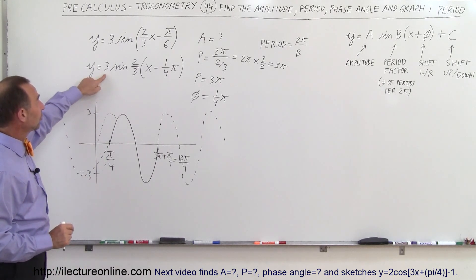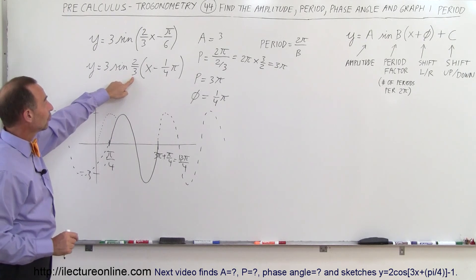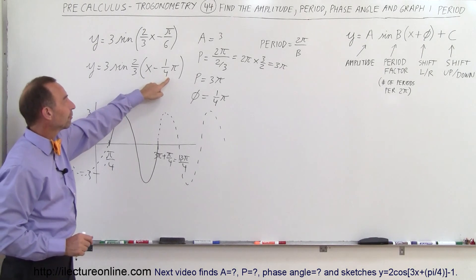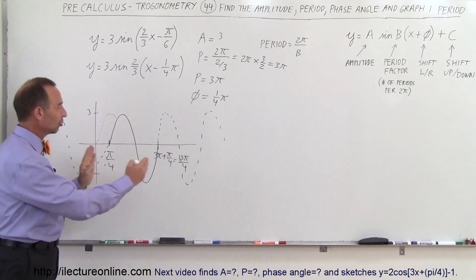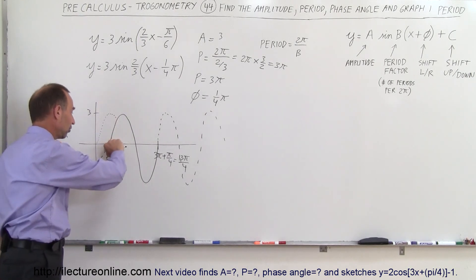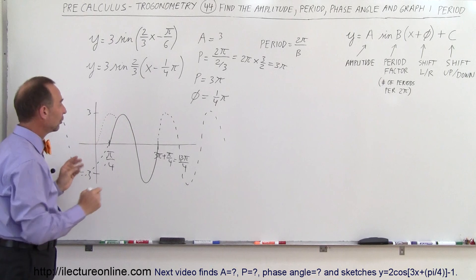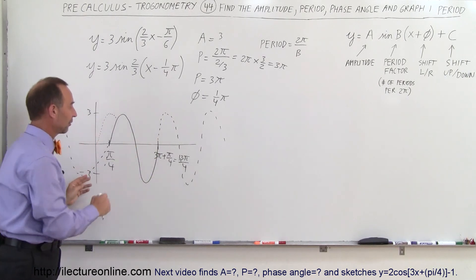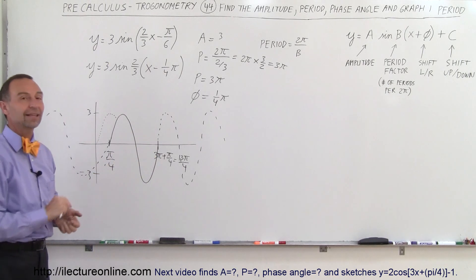So first, what you do is you find the amplitude. You find your period by taking 2π divided by this number. You find your phase angle, and then you see how much it shifts to the right or left. And this is because it shifts to the right, π over four. It's a sine function, so start from zero on up. And notice that the period, one cycle of the function, should equal 3π. That's how we do that.